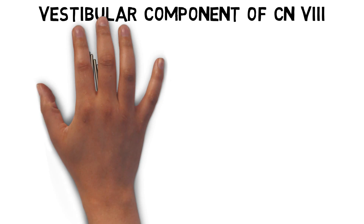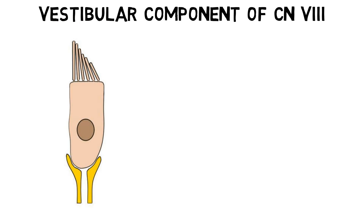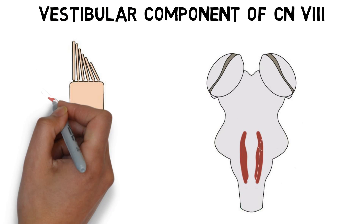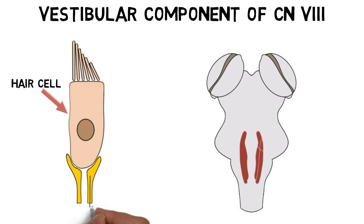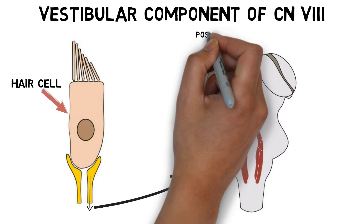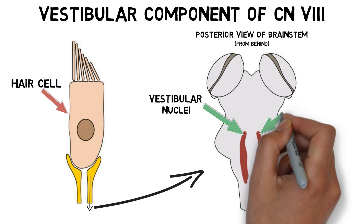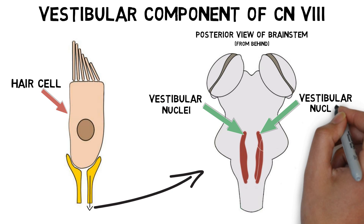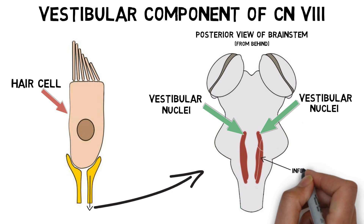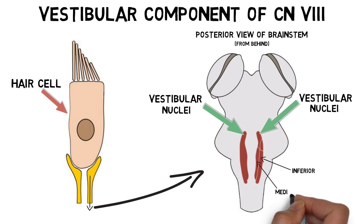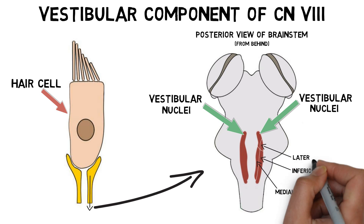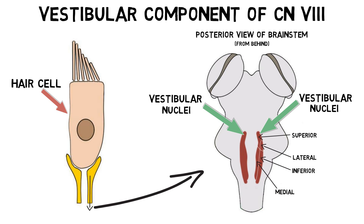The vestibular component of the nerve also receives stimulation from hair cells, but these cells are found in the vestibular apparatus. From there, the nerve travels to the vestibular nuclei in the pons and medulla. The vestibular nuclei consist of four sub-nuclei: the inferior, medial, lateral, and superior vestibular nuclei.